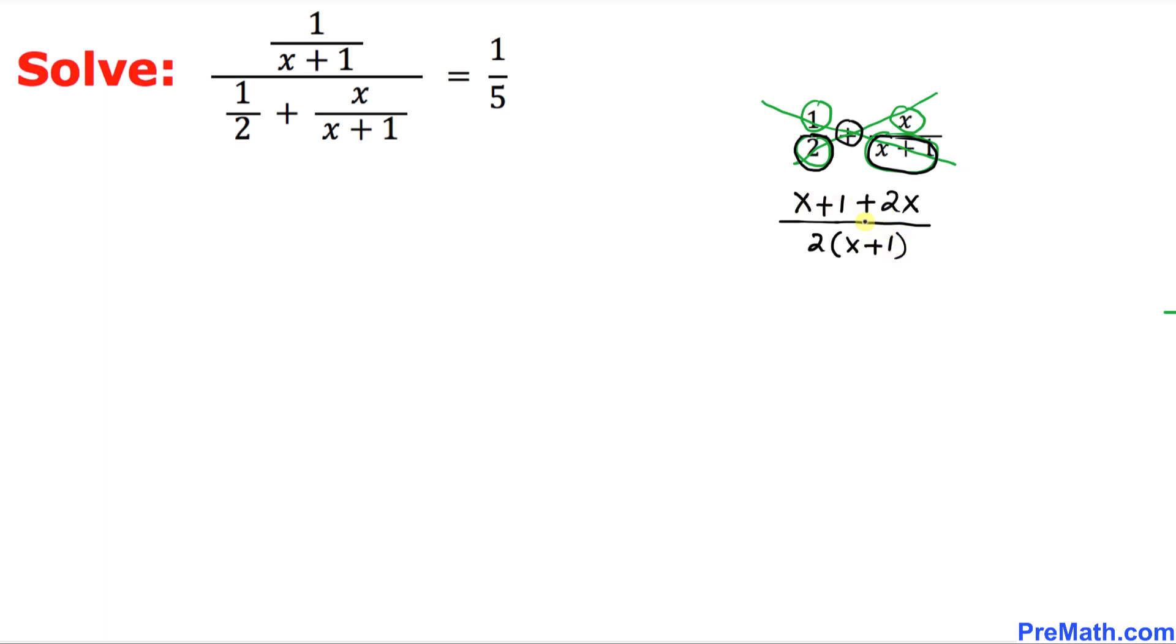Let's simplify on the top. x plus 2x is going to make 3x plus 1 divided by 2 times x plus 1. So let me rewrite this equation. On the top, it is 1 over x plus 1. And then we have this denominator. When we simplify this one on the right-hand side, we got 3x plus 1 over 2 times x plus 1.